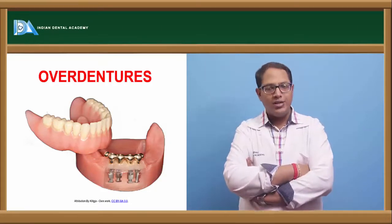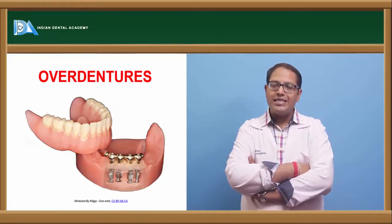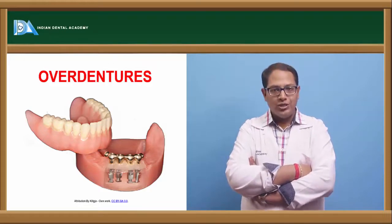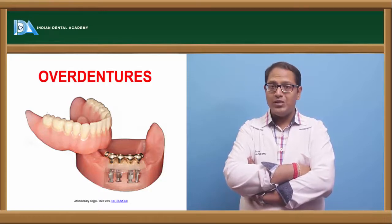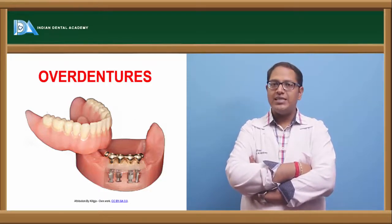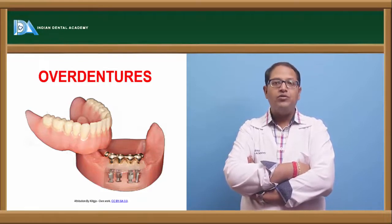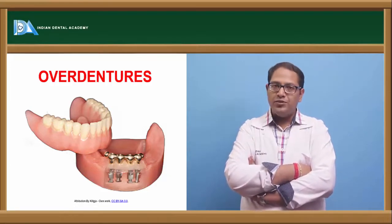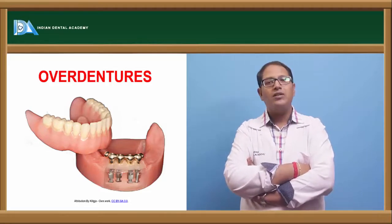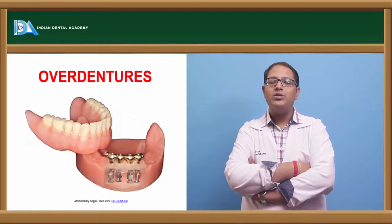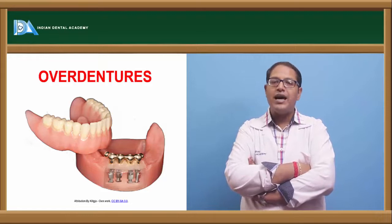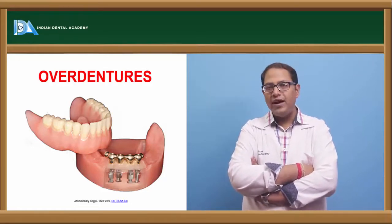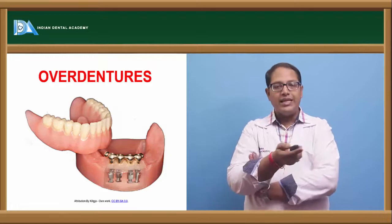Now why is overdenture coming into picture? We all know Sir D. Vance said that preservation of what remains is most important than meticulous replacement. So preventive prosthodontics emphasizes a favorable role where we have to keep the natural teeth which are present, or we can use implants, to preserve the remaining ridge and preserve the bundle bone and not let it resorb more. One technique for this emphasis is overdenture.